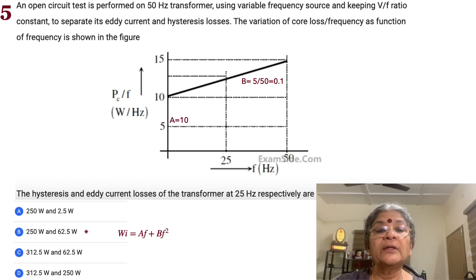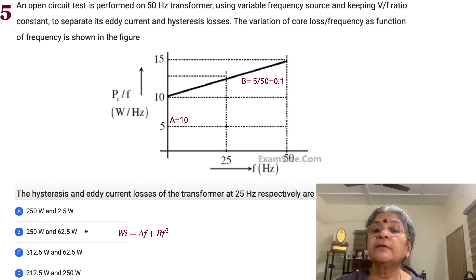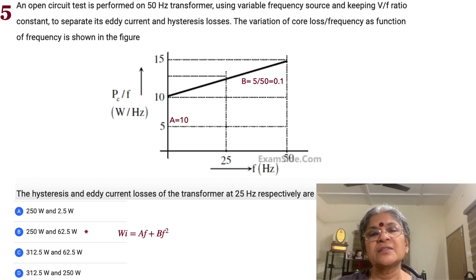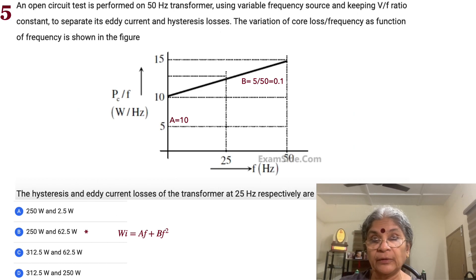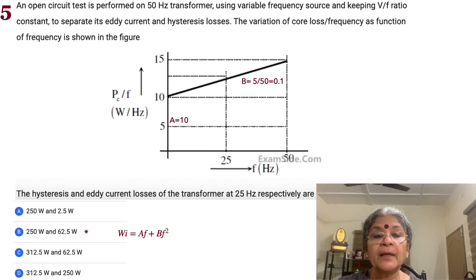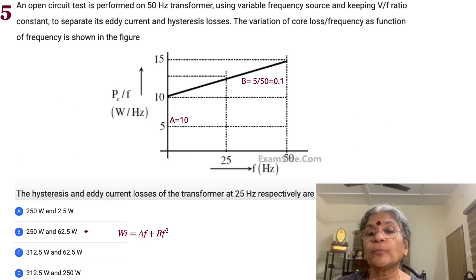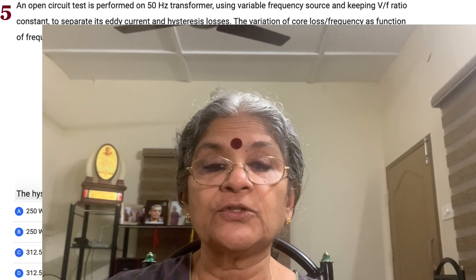An open-circuit test is performed on a 50Hz transformer using a variable frequency source with constant V/f ratio. From the graph, a = 10 and b = 0.1. Eddy current loss at 25Hz = bf² = 0.1 × 25² = 62.5W. Hysteresis loss at 25Hz = af = 10 × 25 = 250W. Option B is correct.